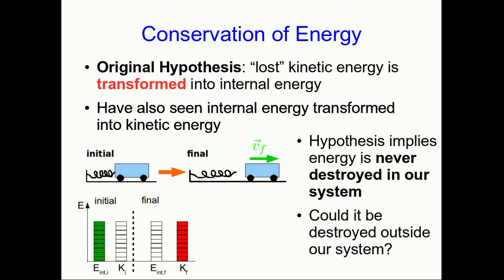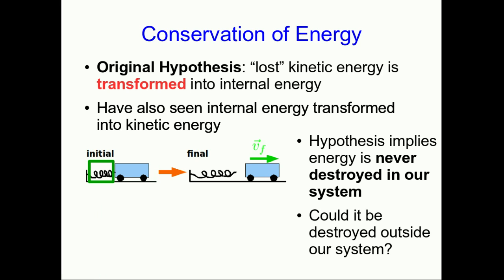Well, could it be destroyed outside our system? You can actually argue from our hypothesis as it already exists that it can't be. Here's the argument: if we think of our system as the spring and the cart, then we know how this works. The energy bar chart is already there. We see the internal spring energy in this system being converted into kinetic energy. But now let's think differently, with just the spring in our system. We know that all that's going on in our system is that we have a bunch of spring energy initially, and finally the spring energy is all gone—it's left the system.